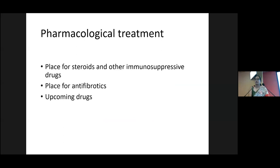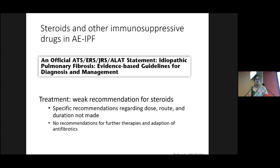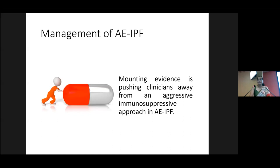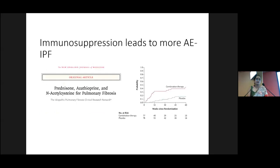For pharmacological treatment, we will discuss steroids and immunosuppressive use, anti-fibrotic use, and other upcoming drugs. In acute exacerbation of IPF, 2011 guidelines suggest using steroids — a very weak recommendation without specified dose, route, or duration. Despite this low level of evidence, most clinicians including us take the pragmatic approach of treating with high-dose steroids with broad-spectrum antibiotic cover. However, there is mounting evidence to push clinicians away from aggressive immunosuppression in acute IPF exacerbation. The 2012 Panther study showed long-term dual immunosuppression in stable ILD causes more harm, including more exacerbations. A 2021 Lancet study showed adding cyclophosphamide on top of IV methylprednisolone pulse definitely increased three-month mortality — so we now advise against use of intravenous cyclophosphamide in these patients.